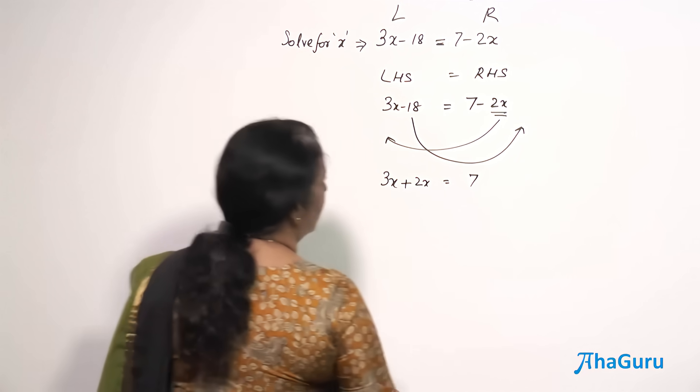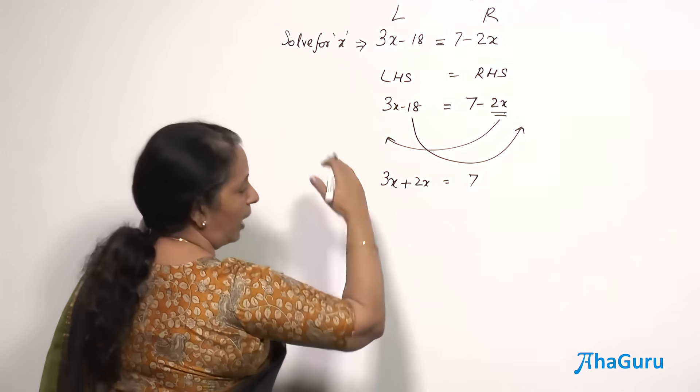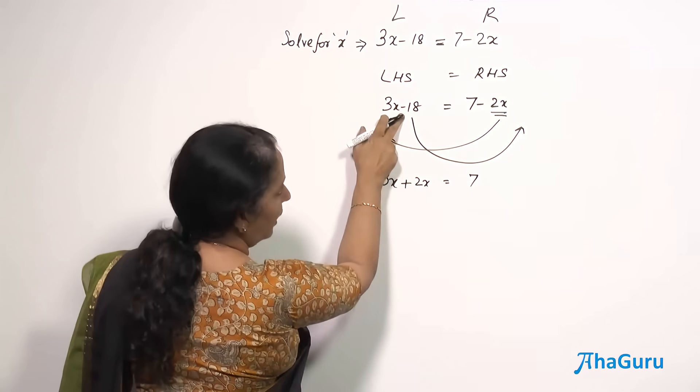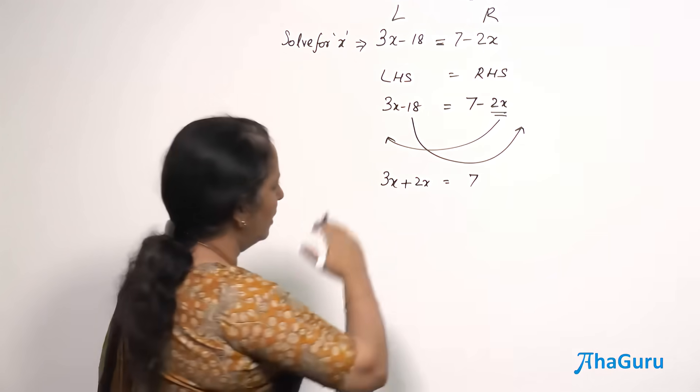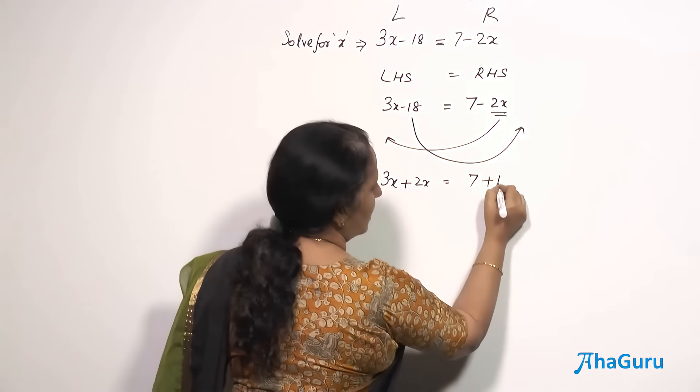Now on the right side, 7 is already there. But 18 was there. I have to take it to that side. There is a sign of minus, negative sign is there. When it goes to that side, it becomes plus 18.